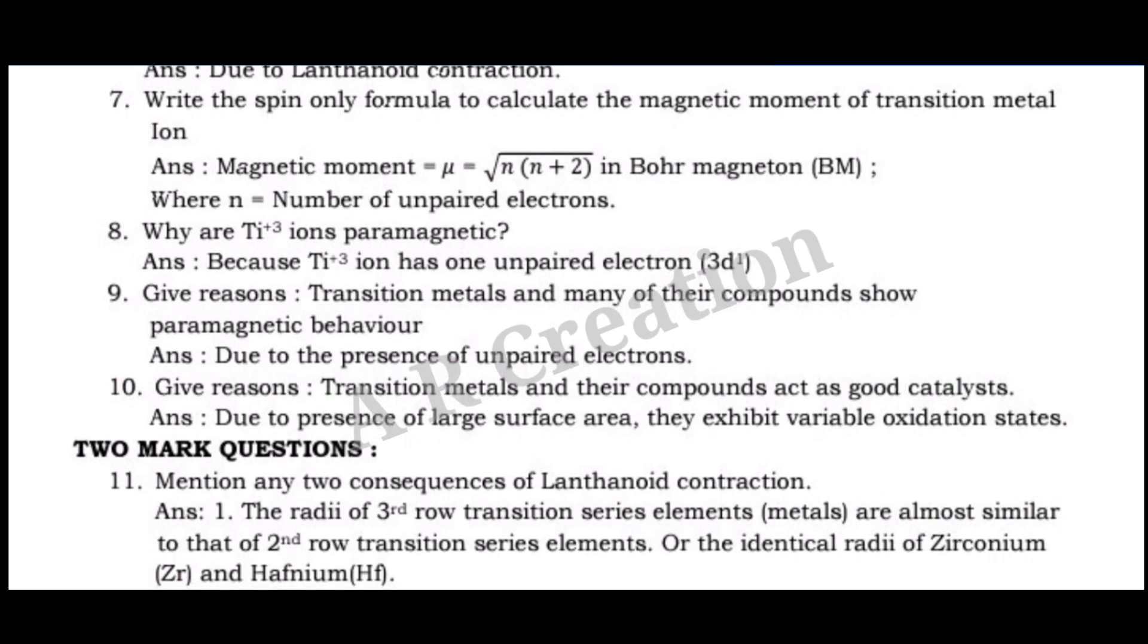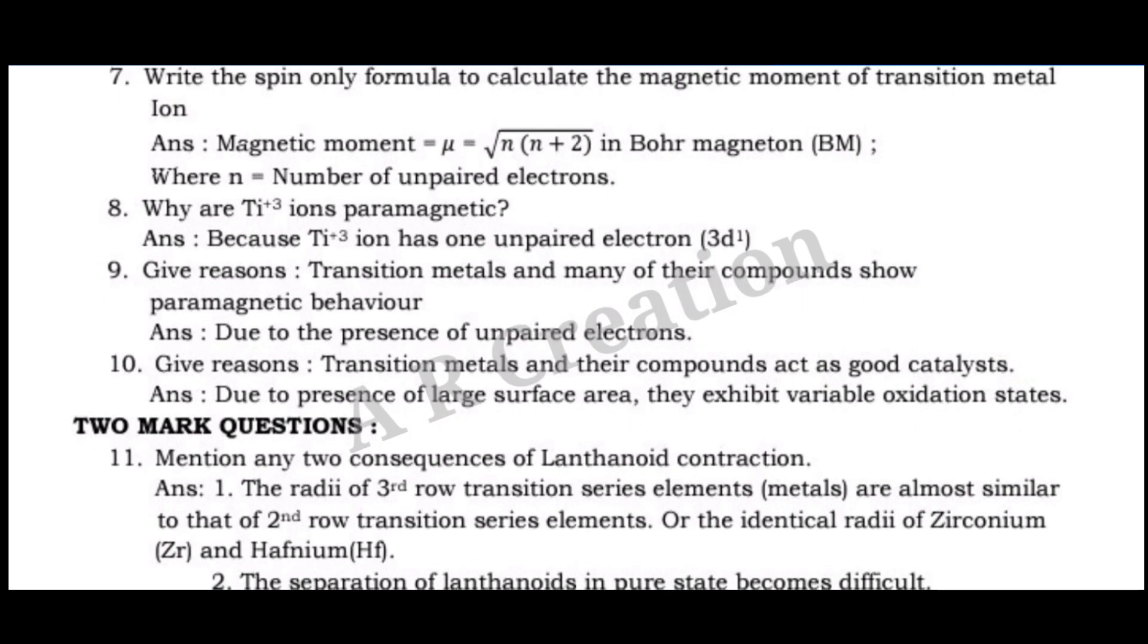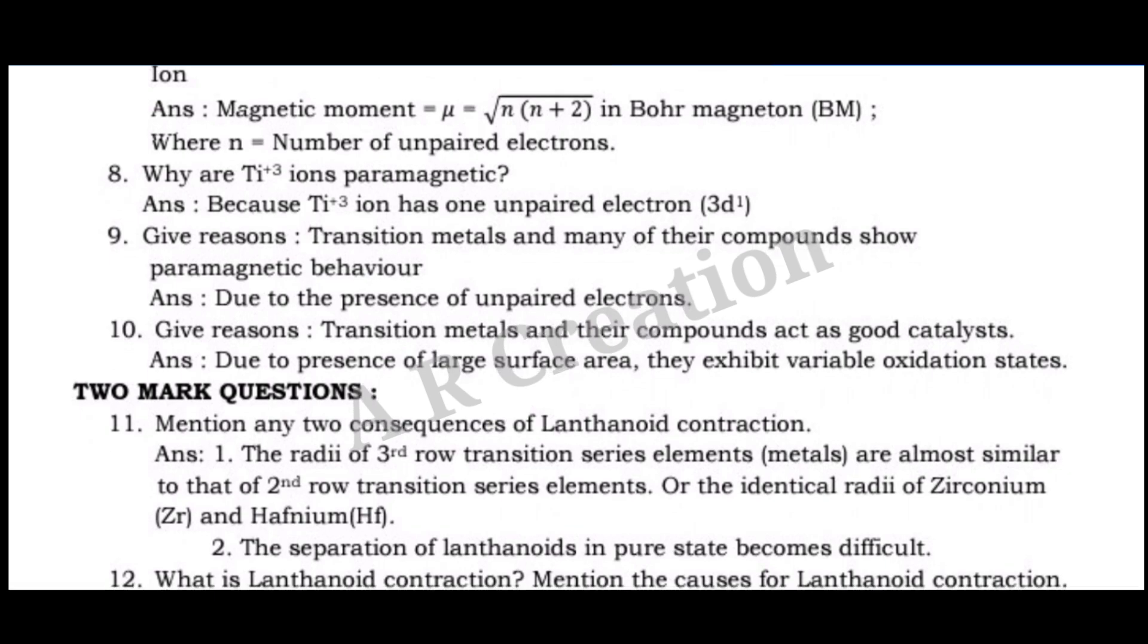Question 8. Why are Ti3+ ions paramagnetic? Answer: Because Ti3+ has one unpaired electron, 3d1.